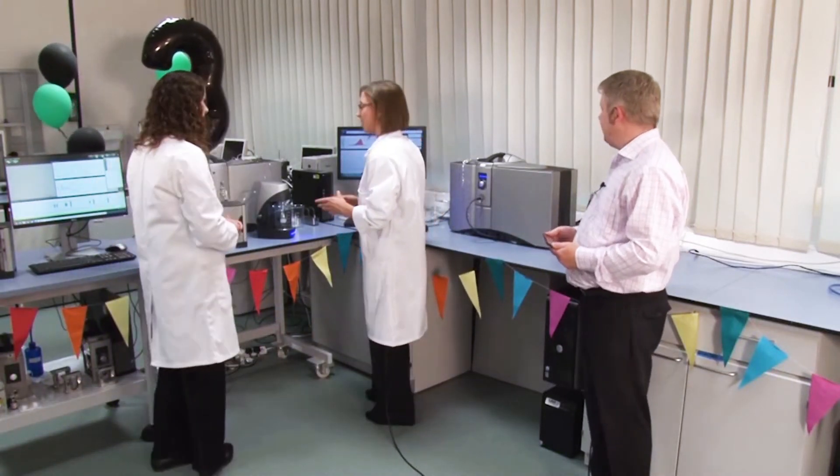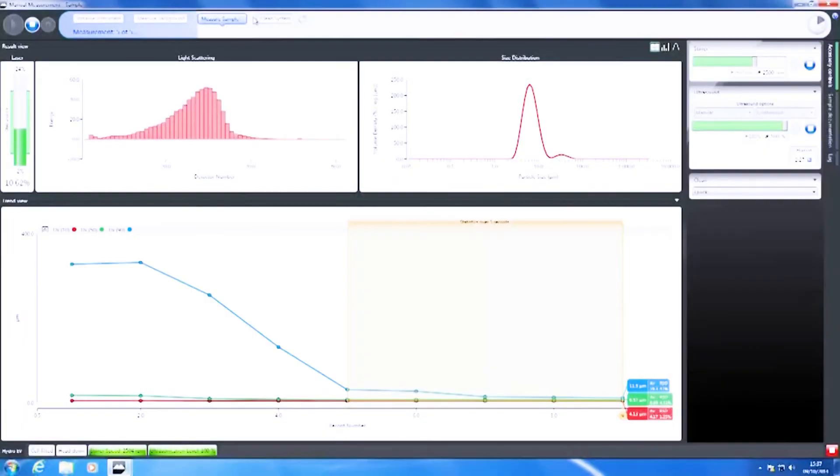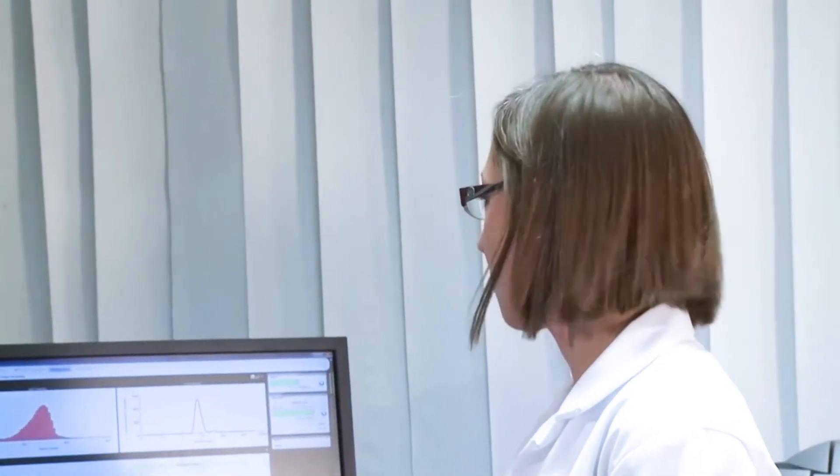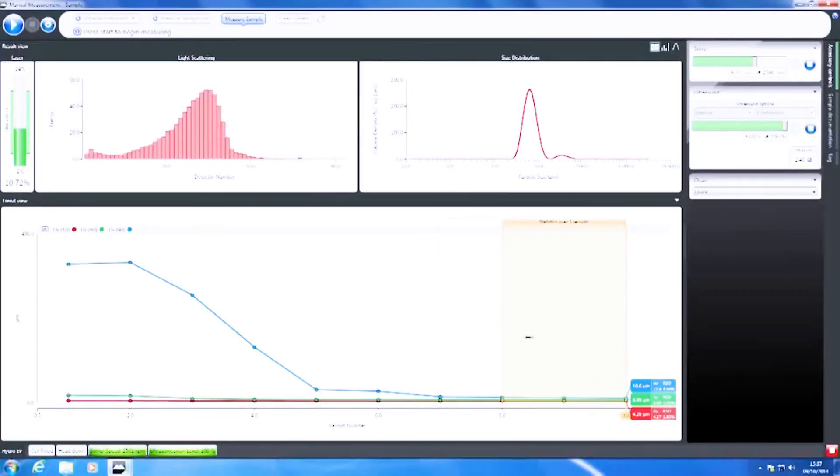So what the master size is showing us, as well as the size distribution, it's building up a trend of the d10, d50, d90. So this trend view is showing us the size parameters against time as we've been applying the ultrasound. So at the beginning, when we didn't have anything on, it was pretty large. And as soon as we turn on the ultrasound, it starts to decrease pretty quickly, and we're getting down towards the stable particle size now. The last few measurements show the size hasn't changed a huge amount.